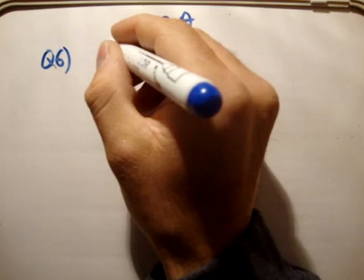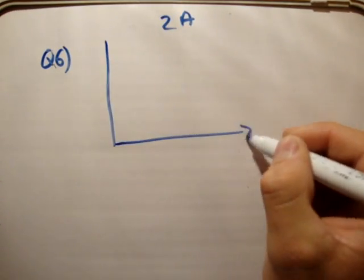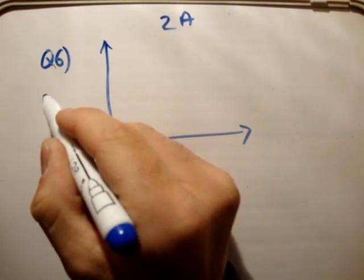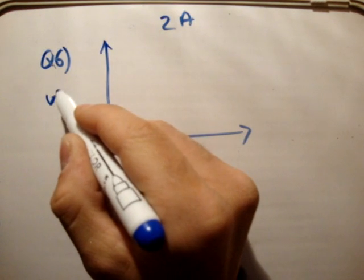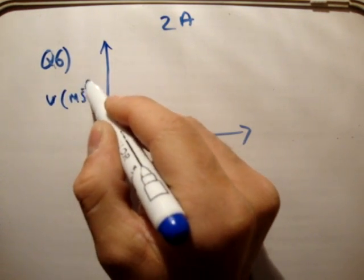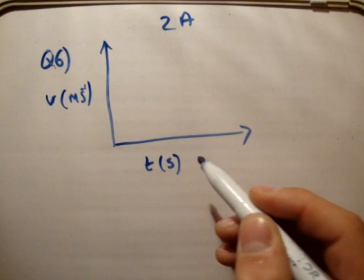So the first thing we'll do is sketch what's going on with our velocity or speed-time graph. So we'll say speed, and we know that's measured in meters per second, and we'll have time down here measured in seconds.